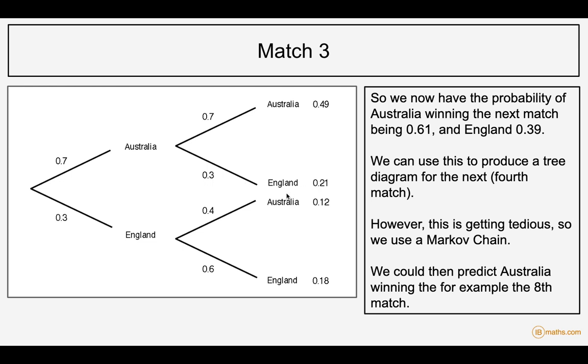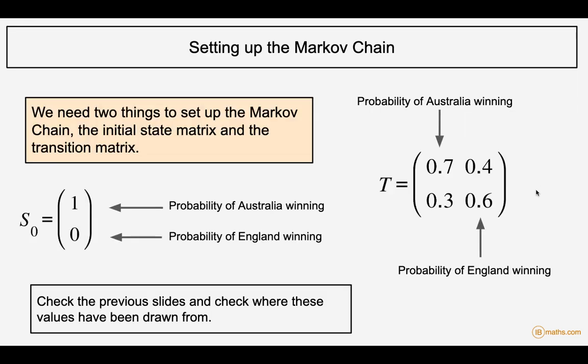We can keep going and do match 4, match 5, and keep producing these tree diagrams. But as it says, it's very tedious. So we set up a Markov chain.